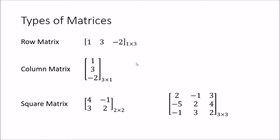The next type is a column matrix, which contains a single column and any number of rows. Here you can see there are three rows and only one column, so the dimension is 3 by 1.